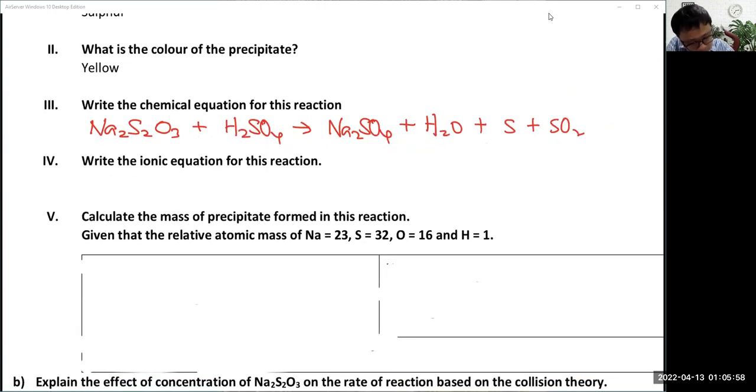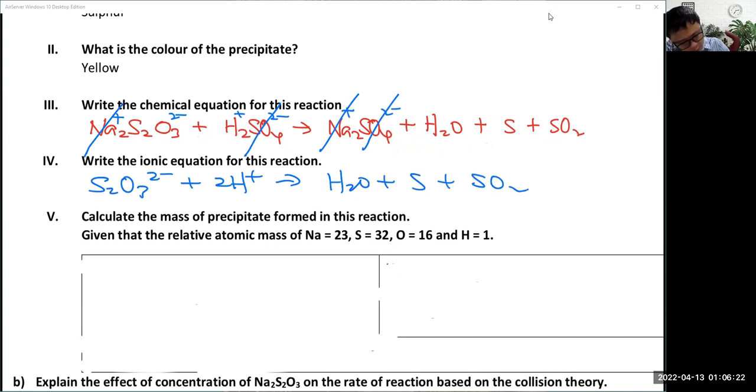The ionic equation: we will cancel the Na, we cancel the SO4. Then we will get S2O3 2- plus 2H+, and then become H2O plus S plus SO2.